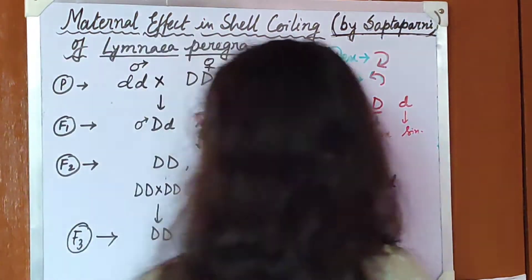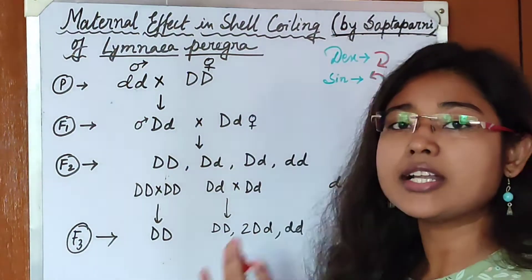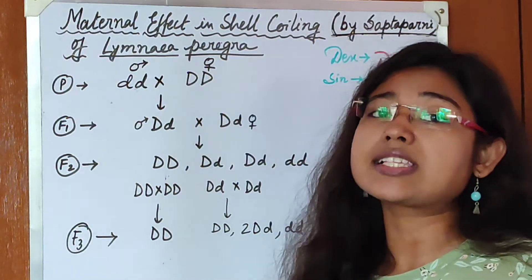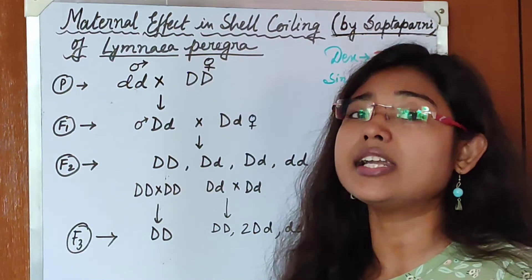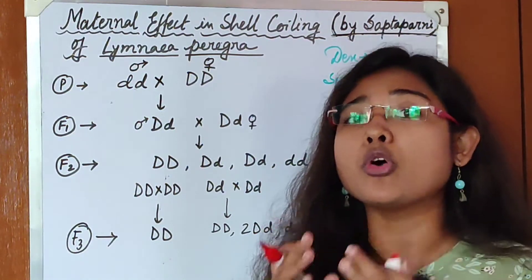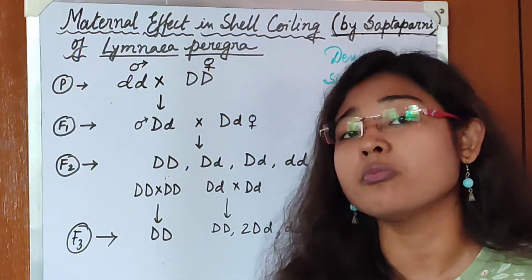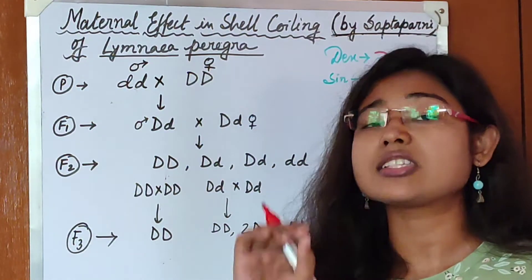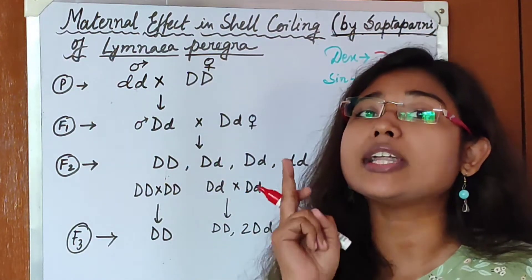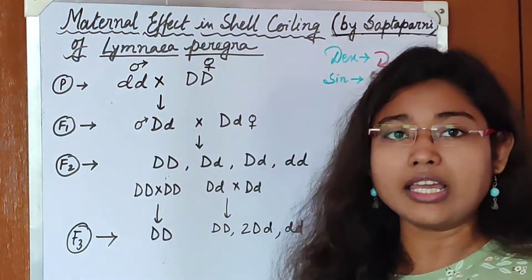But in the case of Limnaea peregra, we can see that not only the presence of capital D or small d determines the coiling pattern. There is something called maternal effect. That means what will be the coiling of the progeny is determined by the genotype of its mother. The phenotype of a progeny is determined by the genotype of its mother — that is known as maternal effect.